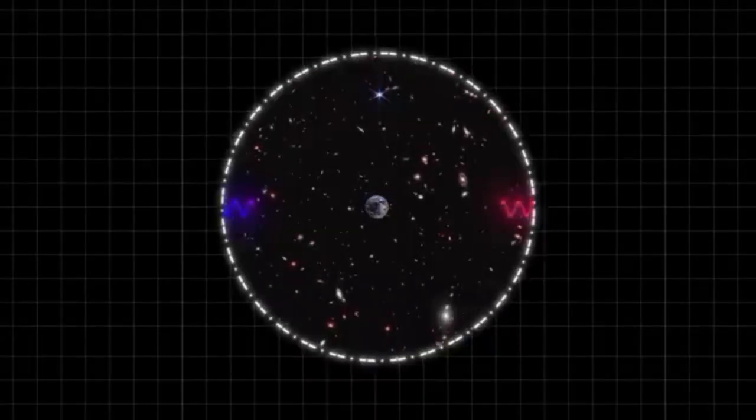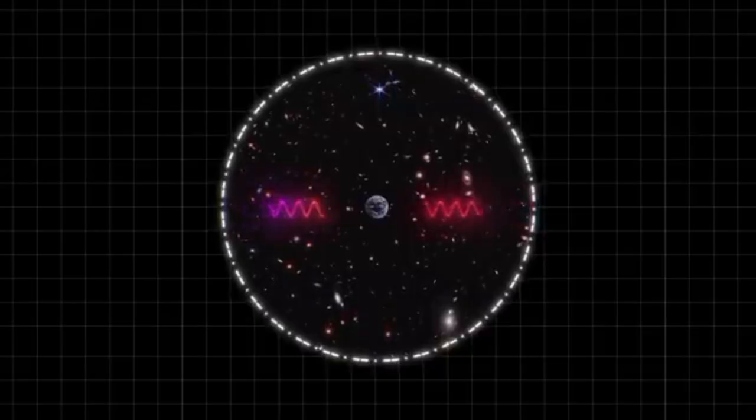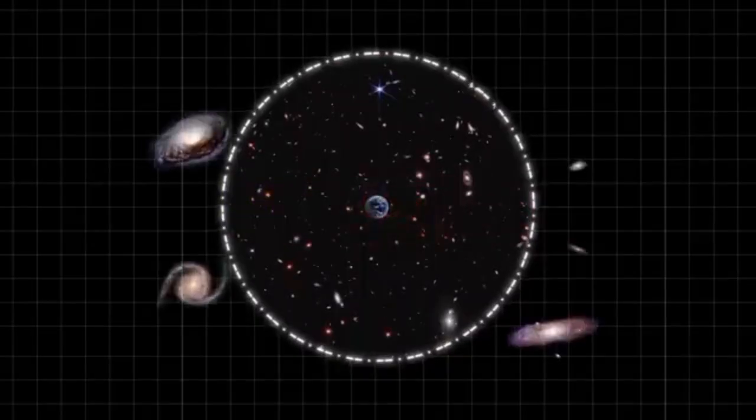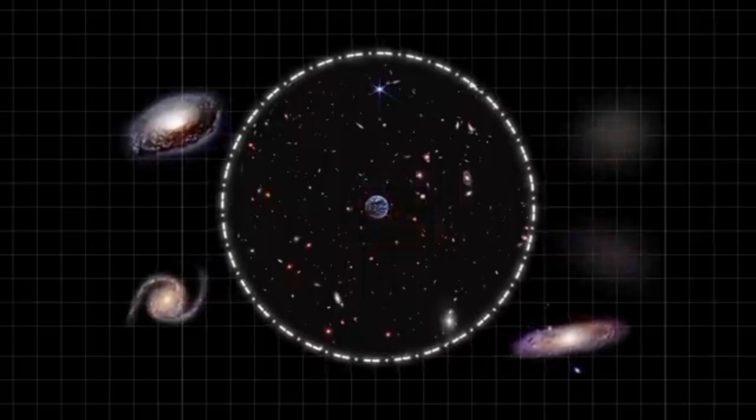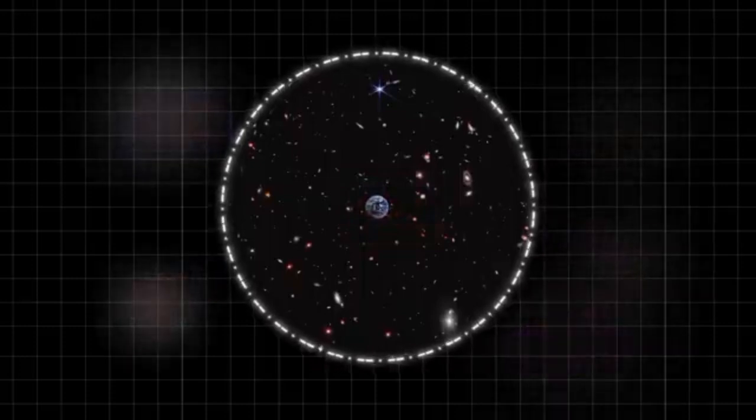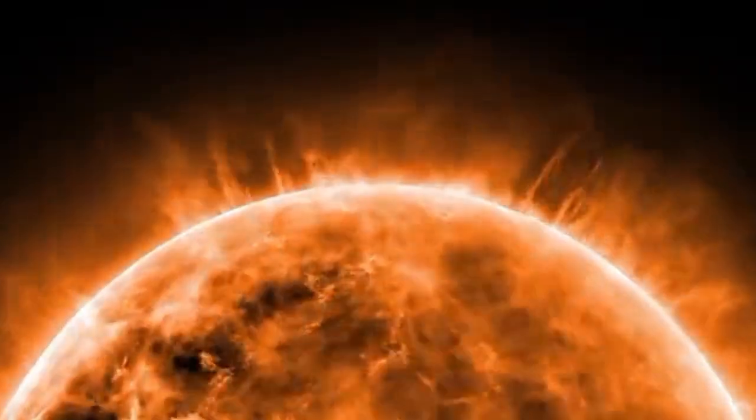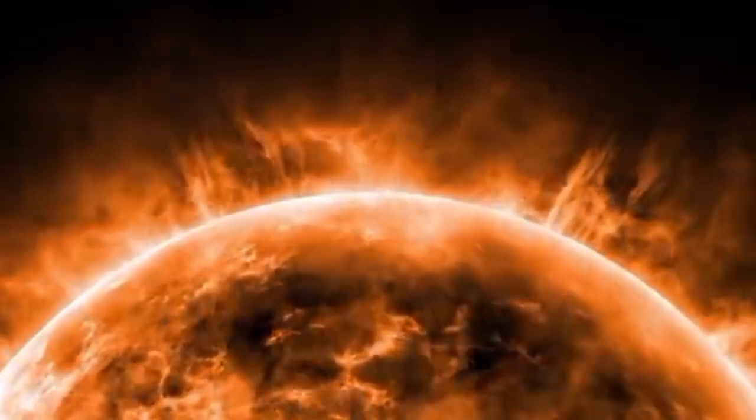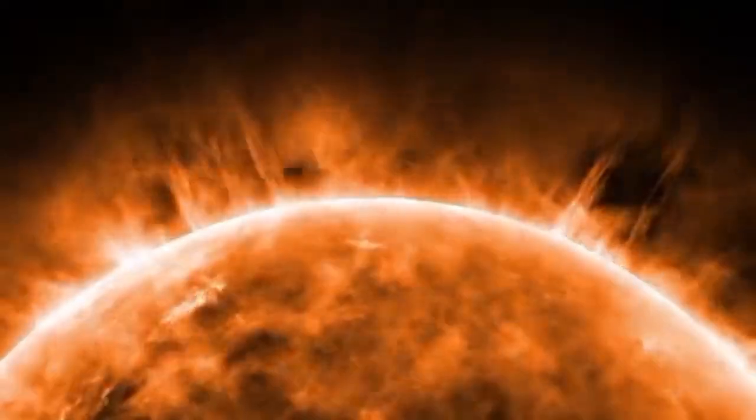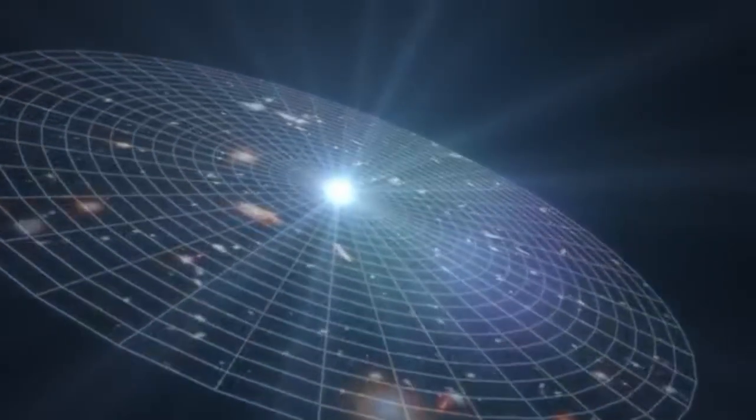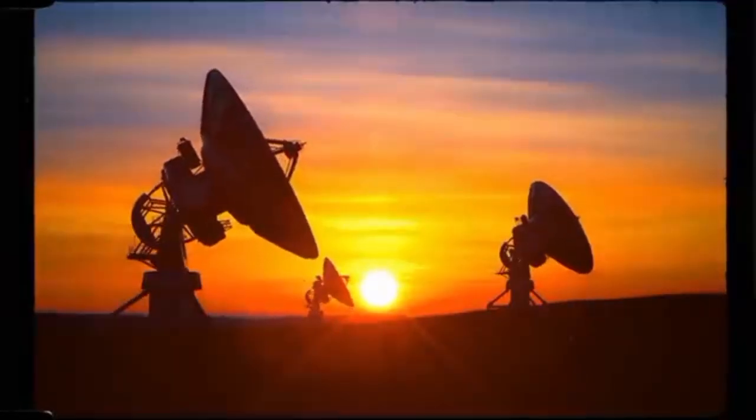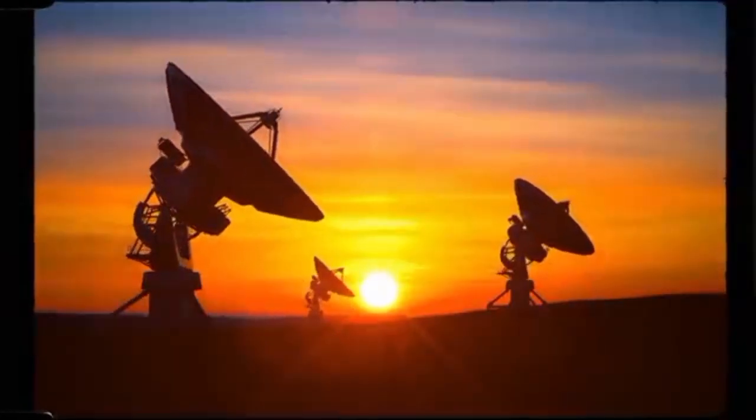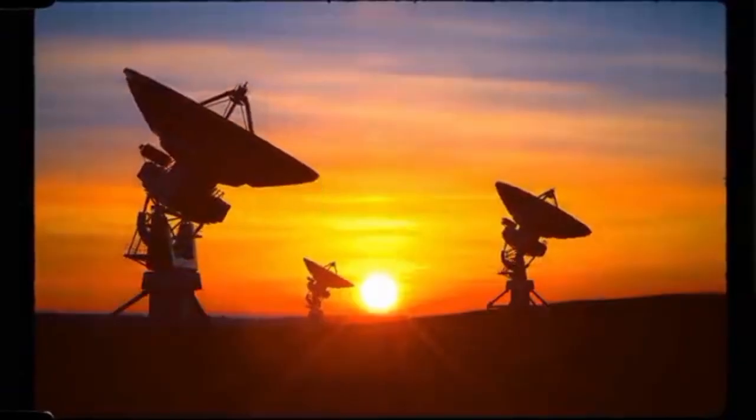Exoplanets are most commonly discovered through the changes they cause in their host stars. A planet's gravitational pull can cause its host star to wobble, and this radial velocity can be detected by astronomers. The Kepler Space Telescope utilized the transit technique, which measures the loss of brightness caused when an exoplanet passes in front of its star. This method has provided helpful data about the size, distance, and temperature of exoplanets.